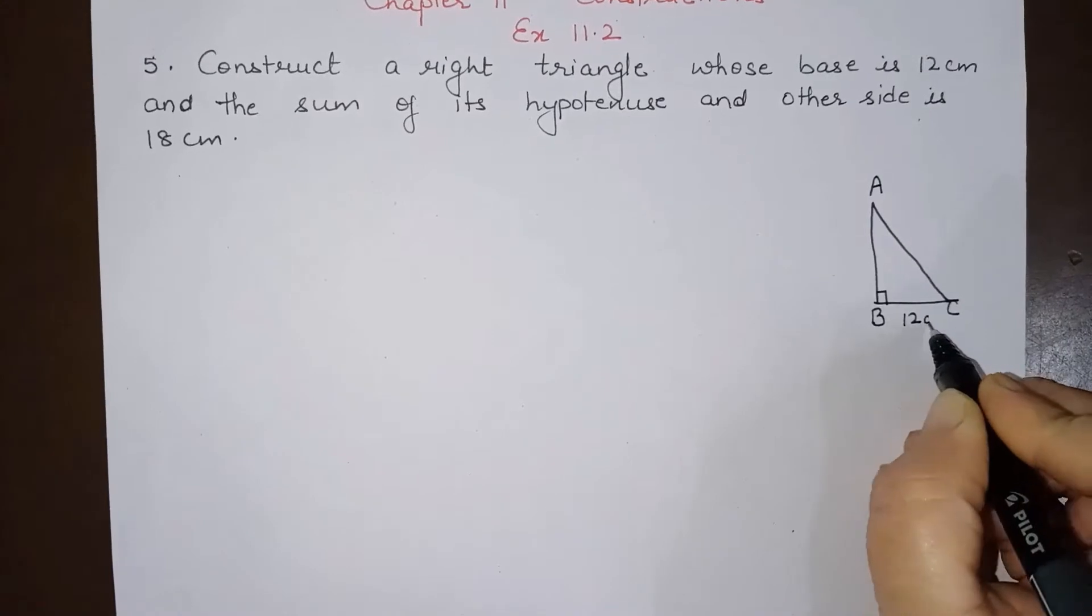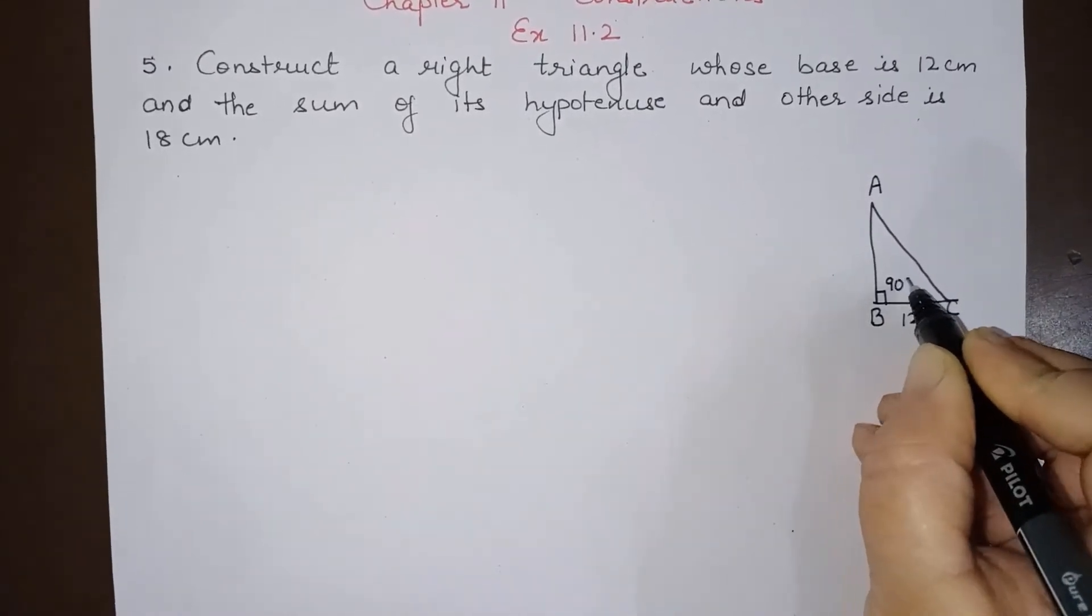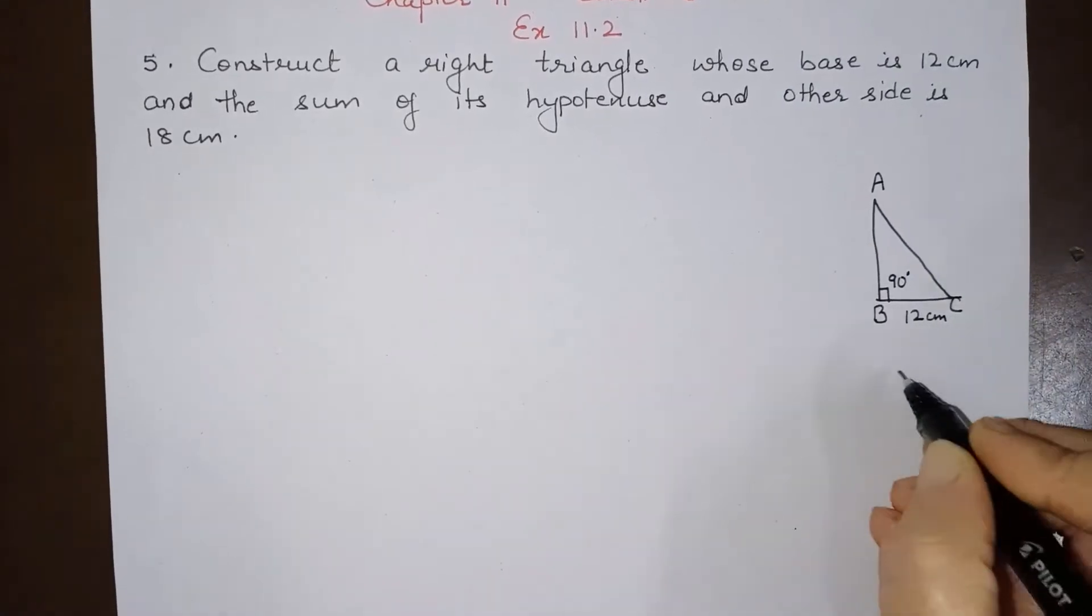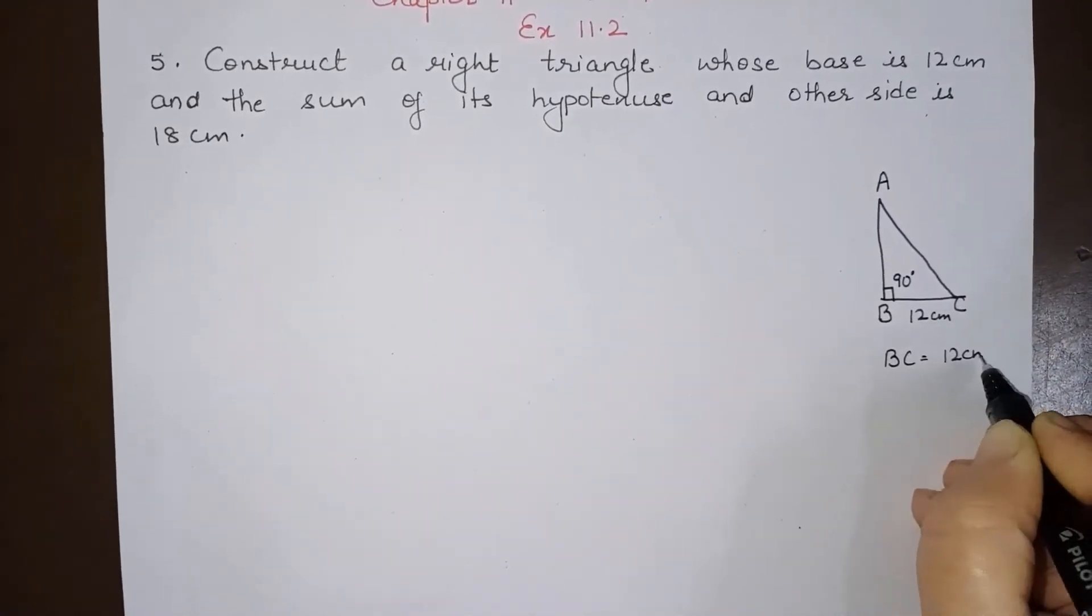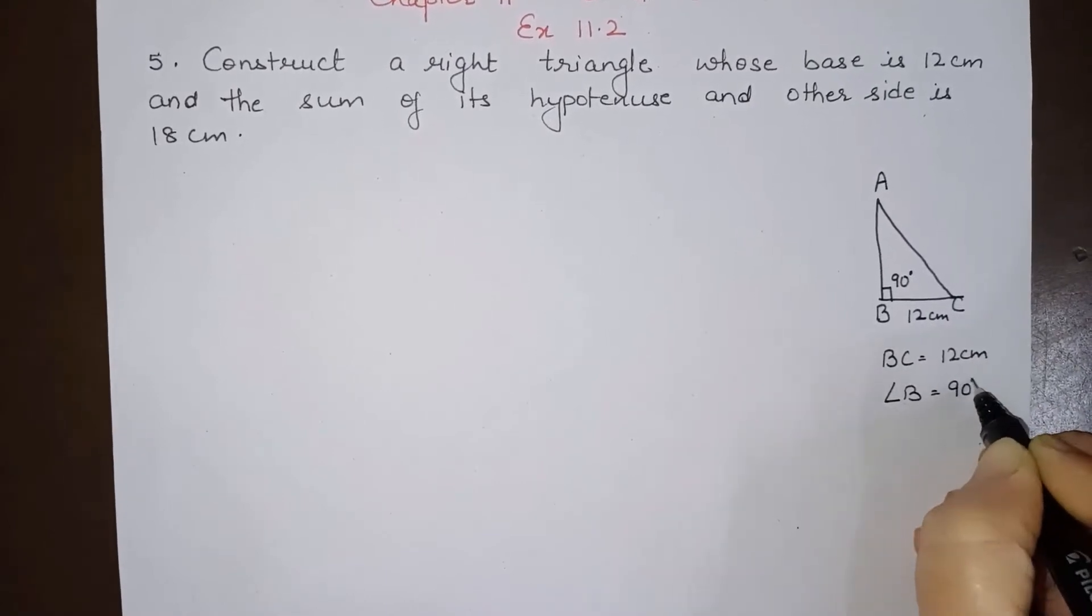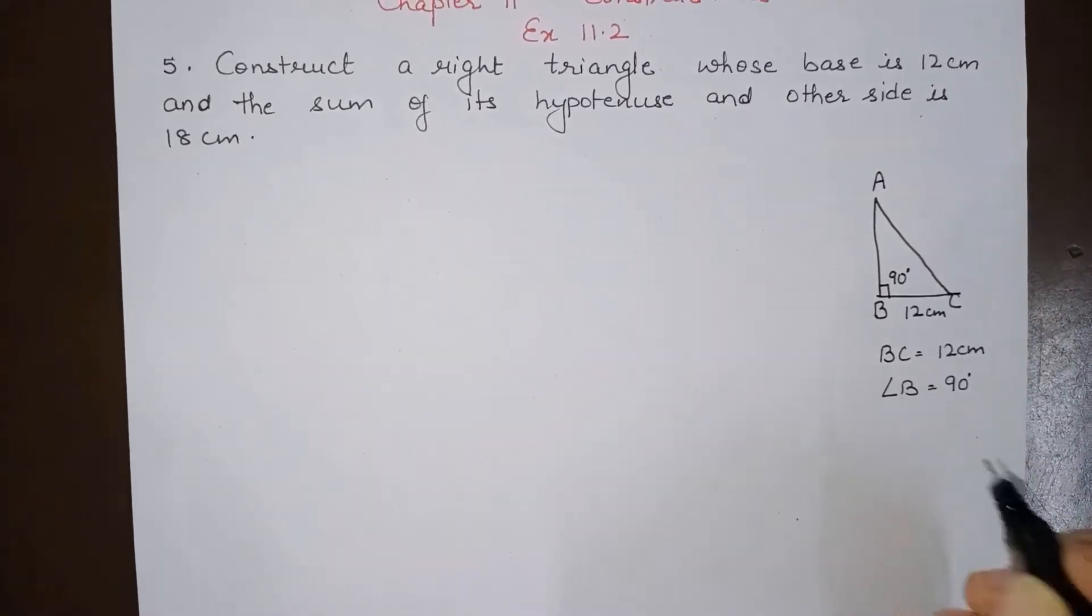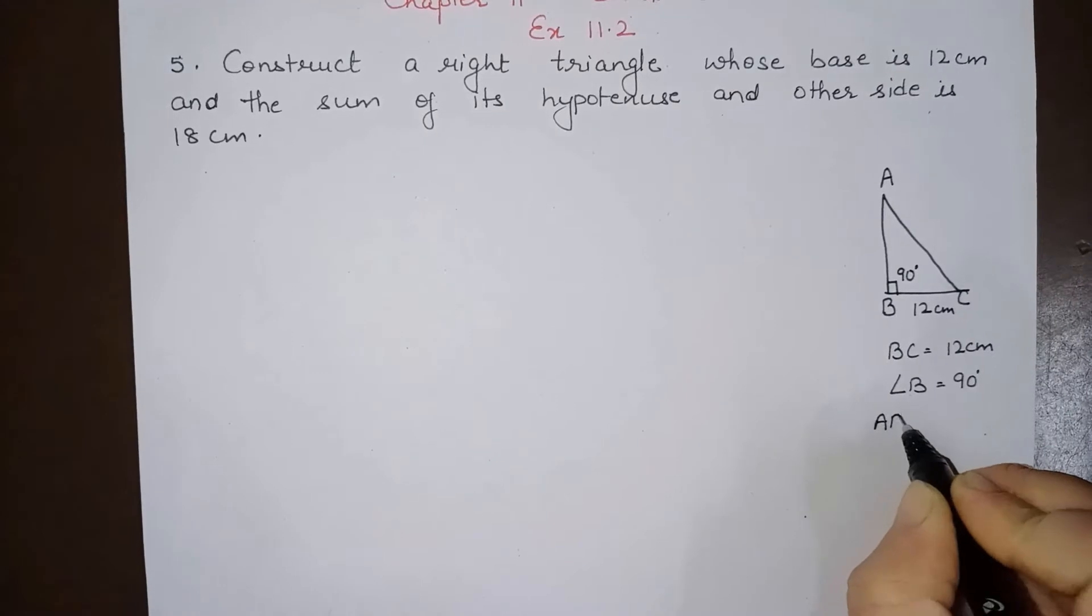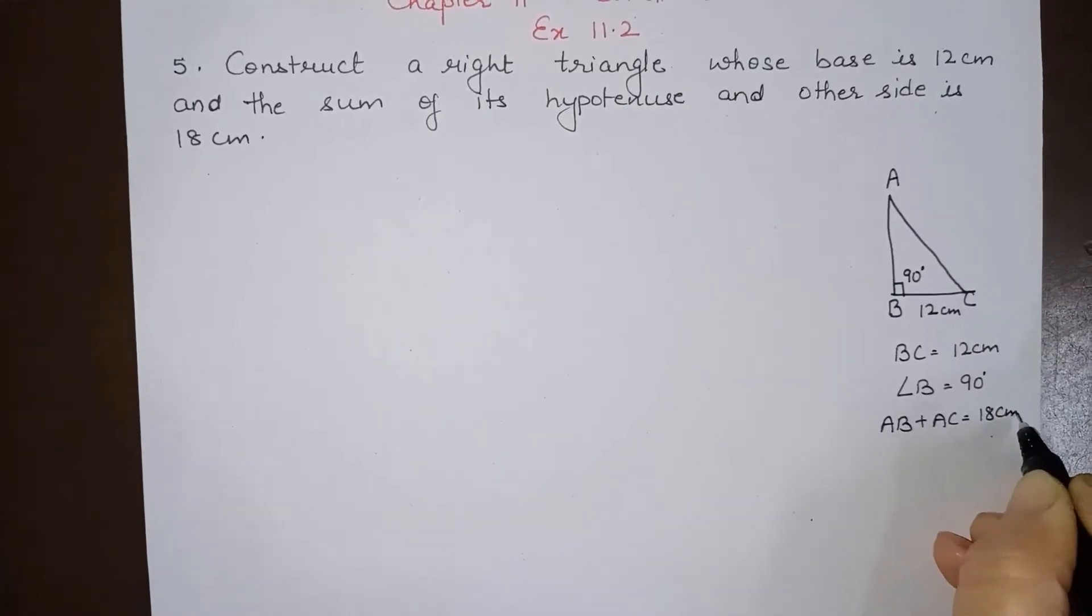Base is given to be 12 cm and base angle will be 90 degrees as it is a right angled triangle. BC is 12 cm which is base, angle B is 90 degrees which is a base angle, and sum of its hypotenuse and other side is 18 cm, that is AB plus AC is 18 cm.